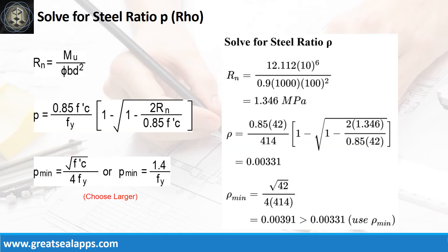Given maximum moment equals 12.112 kN per meter, resistance factor equals 0.9, B equals 1000 mm, and D equals 100 mm, the beam design ratio Rn equals 1.346 MPa, and reinforcement ratio Rho equals 0.00331. Use Rho minimum of 0.00391.